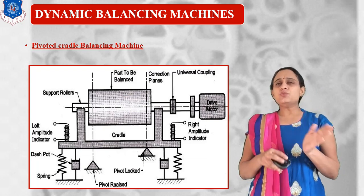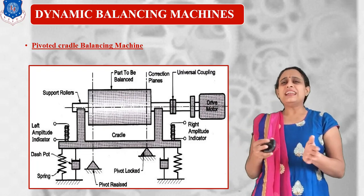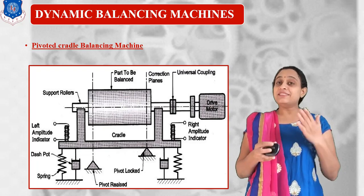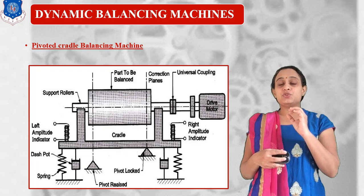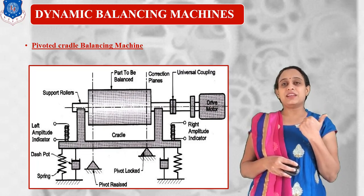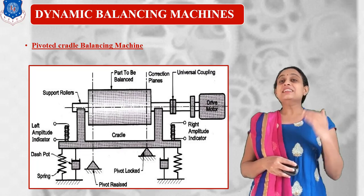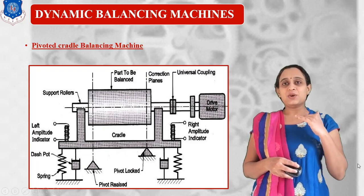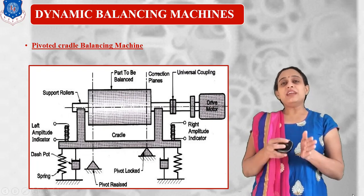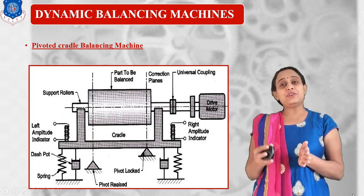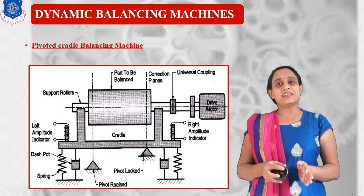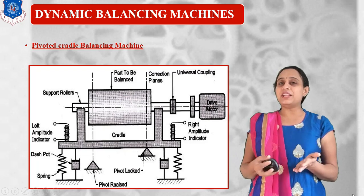The released pivot gives us the exact value of whether that particular portion is balanced or not. First, we lock one pivot — say the right-side pivot — then move the released pivot point by point to get amplitude values showing how much the system is imbalanced. That amplitude is measured by the left-side amplitude indicator, which indicates the displacement x. Then we lock the left-hand side pivot and move the right-hand side pivot to get different values at different points, measured by the right-side amplitude indicator, which also gives the displacement value.